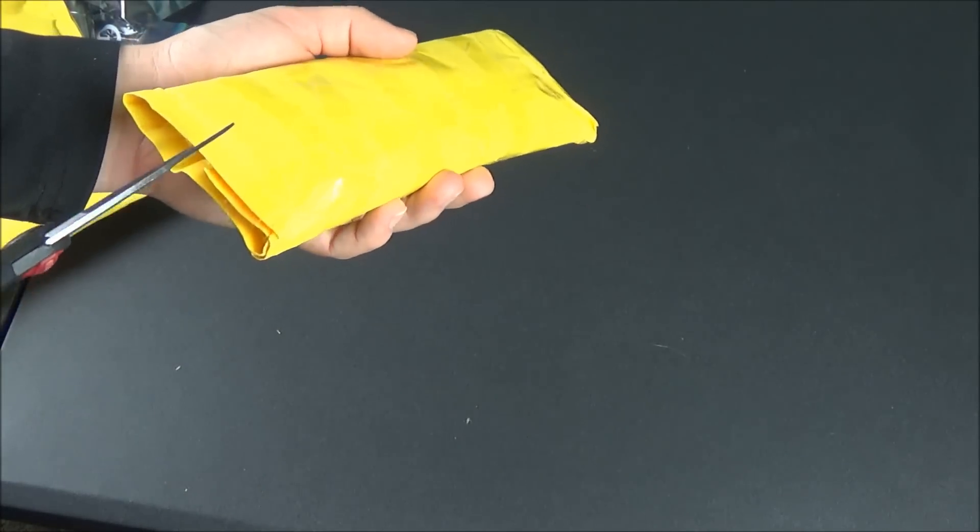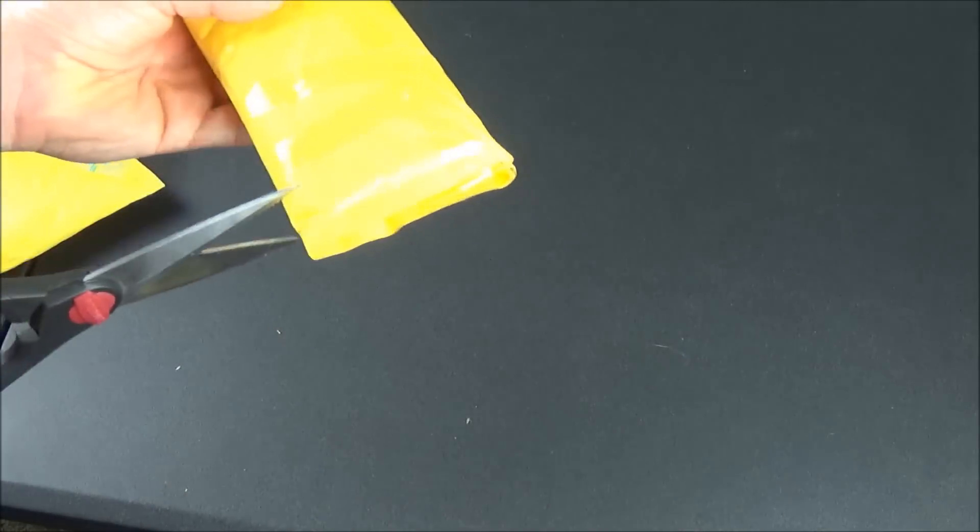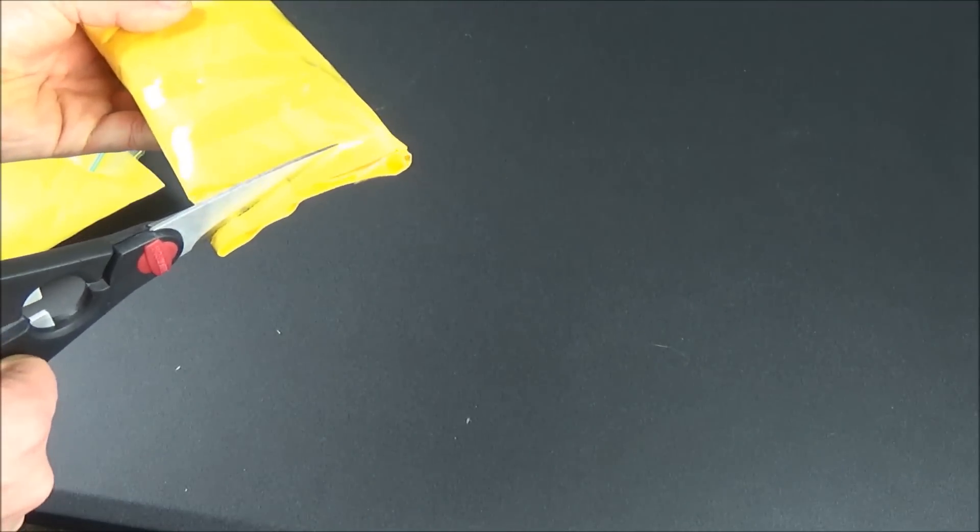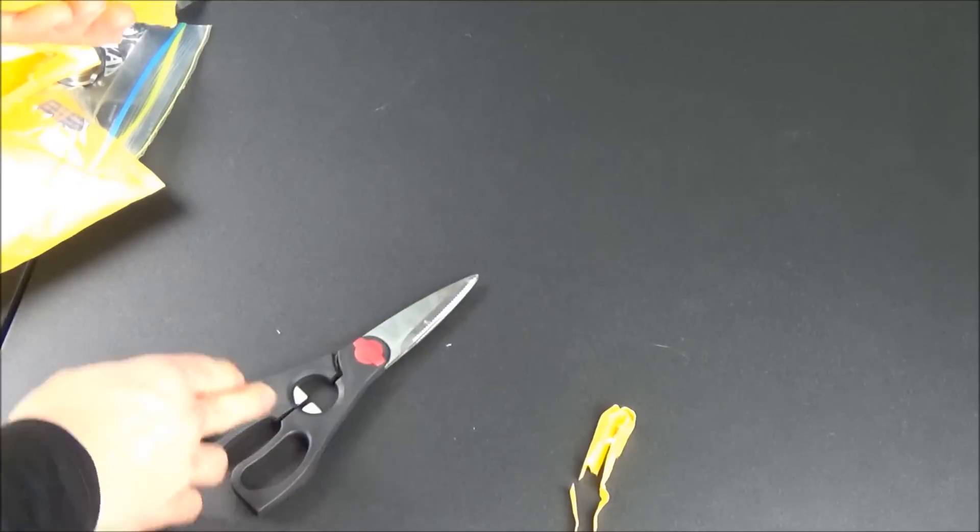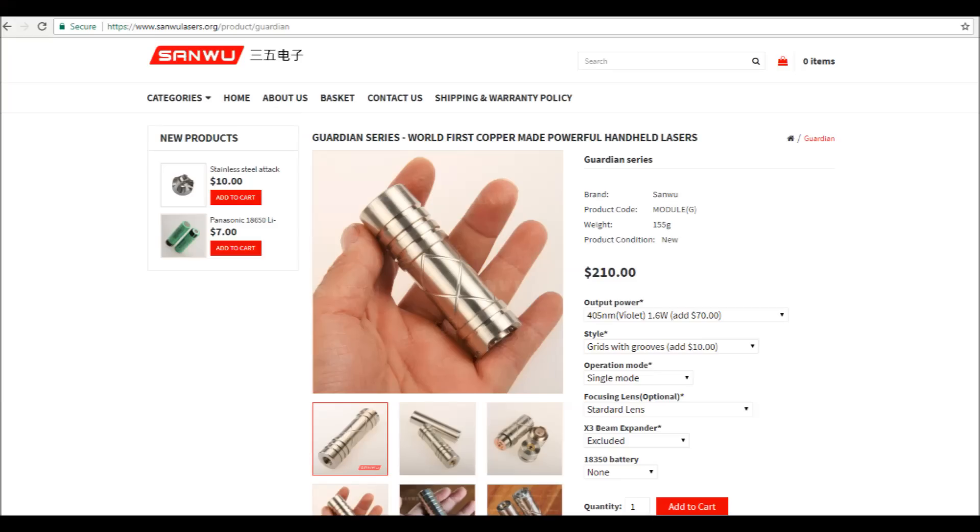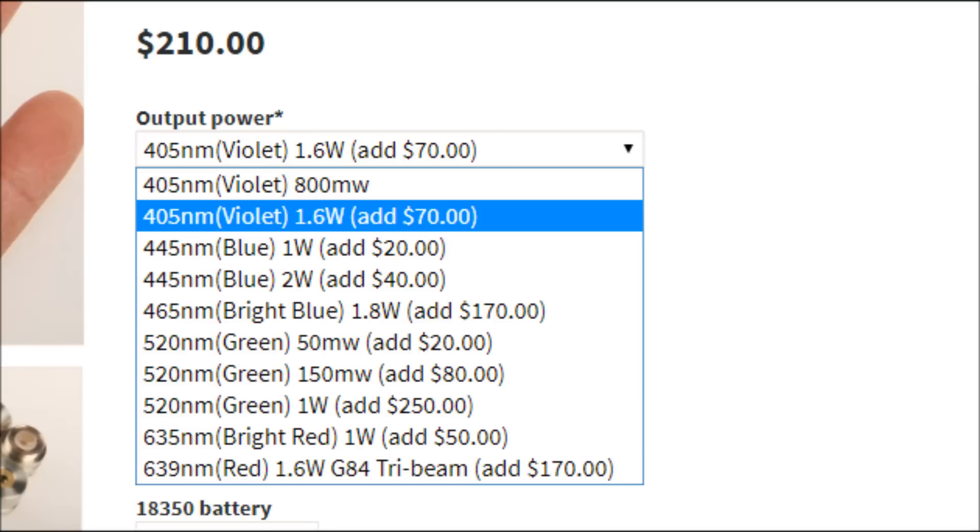This one is their purple 405 nanometer 1.6 watt model with the optional grid groove handle style, so with all of that it retails for $210 without the battery. With the battery there's an extra fee, it's like a couple of bucks, and then there's some other add-ons you can purchase as well.